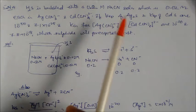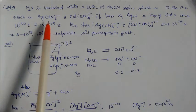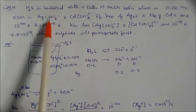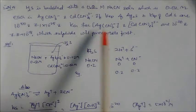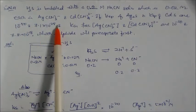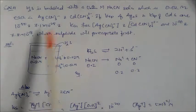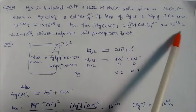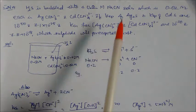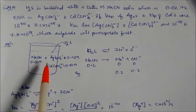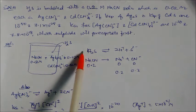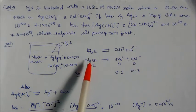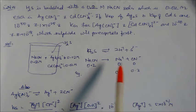Numerical Example 4: H₂S is bubbled into a 0.2 molarity sodium cyanide solution which is 0.02 molarity in silver cyanide and cadmium cyanide. The Ksp of silver sulfide and cadmium sulfide are given; Ksp of silver sulfide is lesser than that of cadmium sulfide. The instability constants of silver cyanide and cadmium cyanide complexes are 10⁻²⁰ and 10⁻¹⁸ respectively. H₂S dissociates, and sodium cyanide dissociates into Na⁺ and CN⁻ at 0.2 molarity.